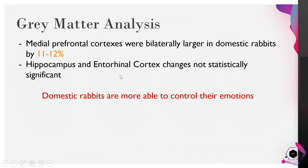They also determined that the medial prefrontal cortexes were bilaterally larger in domestic rabbits by about the same amount that the amygdalas were smaller. This explains why the overall volume wasn't changed — as one part was shrinking, the other part was getting larger. From this, we can gather that domestic rabbits are more able to control their emotions.